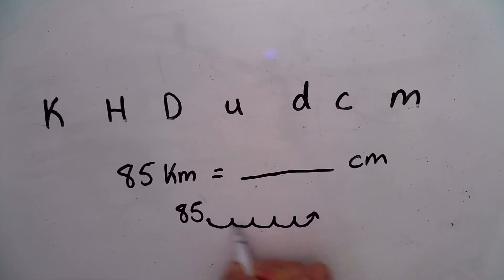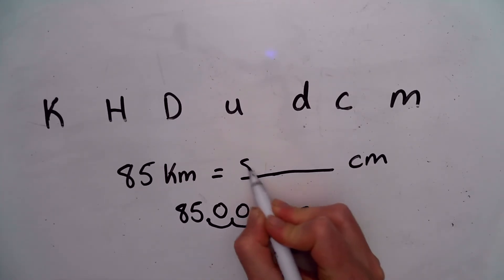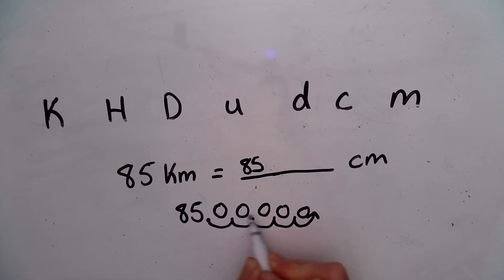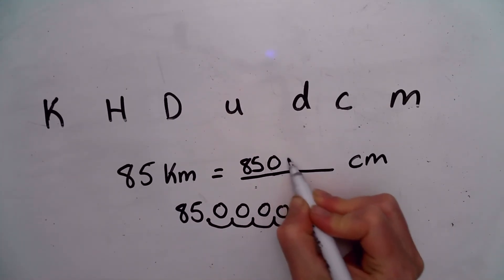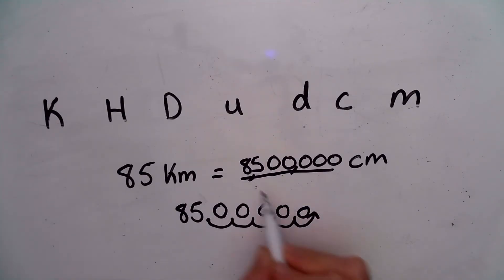In each of these loops, I'm going to fill in with a zero. And then I would have to rewrite my number nice and neat. Eight, five, one, two, three, four, five zeros. 8,500,000 centimeters is equivalent to 85 kilometers.